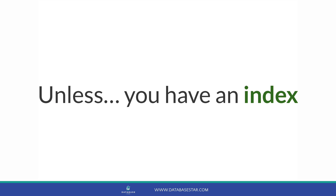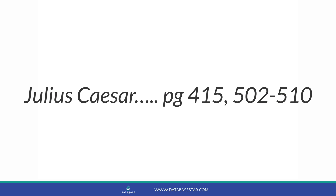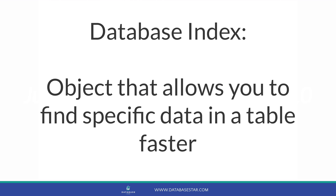Let's go back to our textbook example. Let's say this textbook had a section at the very end called index. It listed all of the topics covered in the book, and in this index section there would be an entry for Julius Caesar, showing the specific page numbers where this topic is mentioned. Now all you need to do is turn to those page numbers. This is the same way that indexes work in databases. An index is an object in the database that allows you to find specific data in a table faster. Like the index section in a book, they take up a bit more space, but the benefits they bring are often worth it.